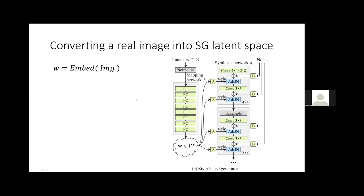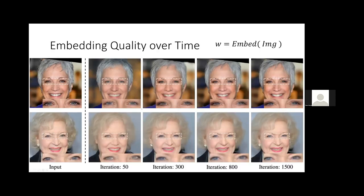One fundamental operation is taking an RGB image and converting it back to a W code — what I call embedding. There are two ways: optimization-based and encoder-based, where you train a network that takes an image as input and outputs a W code. The embedding is tricky because everything looks great from a distance, but things can start to look a bit weird when you zoom in.